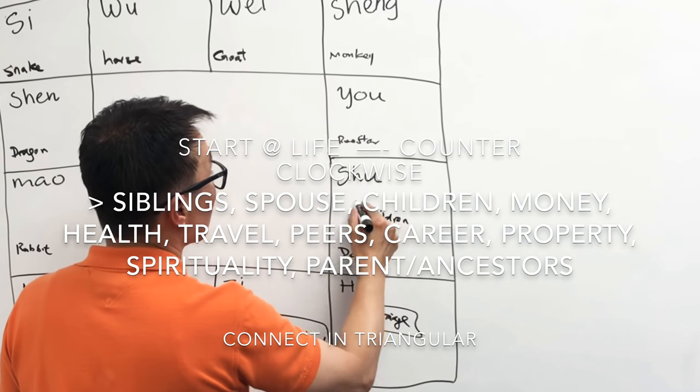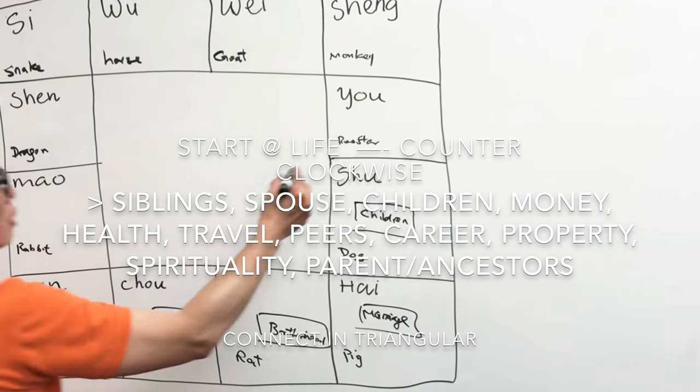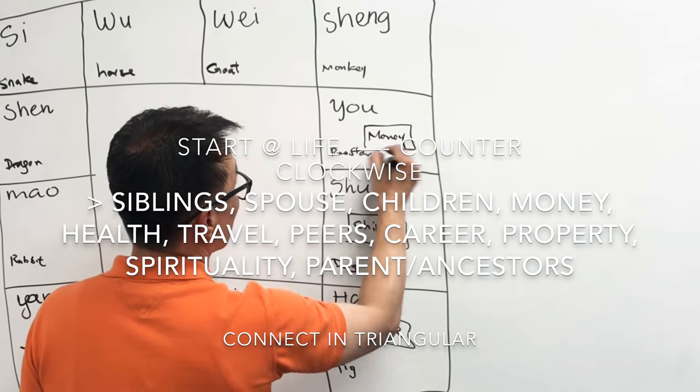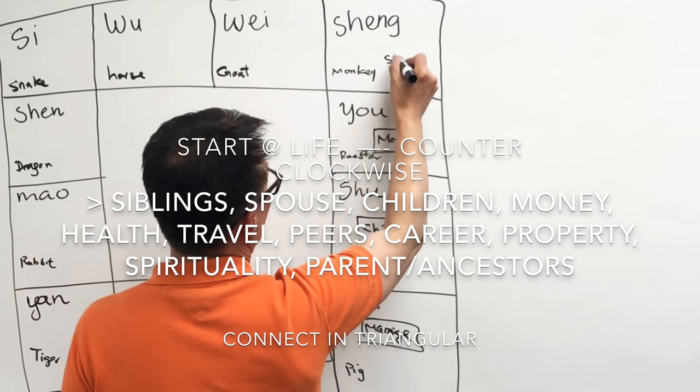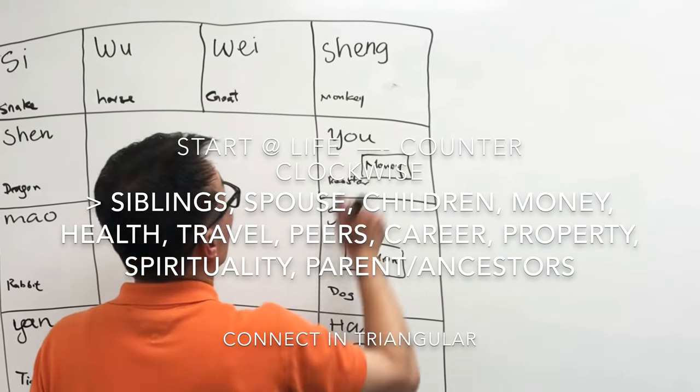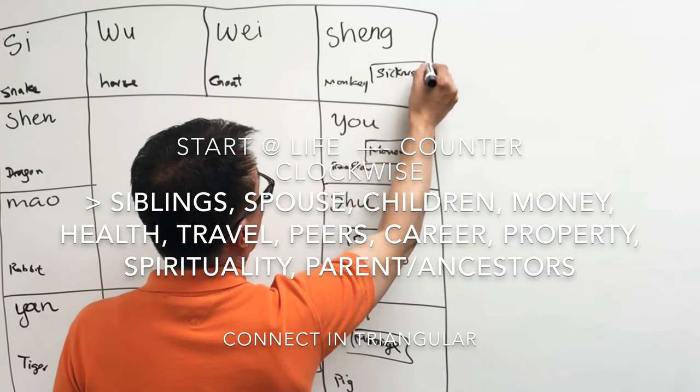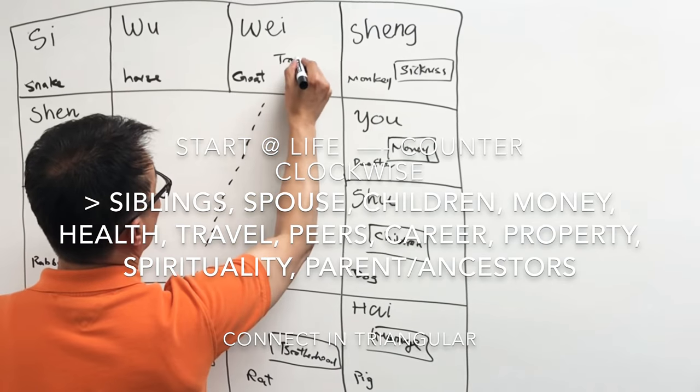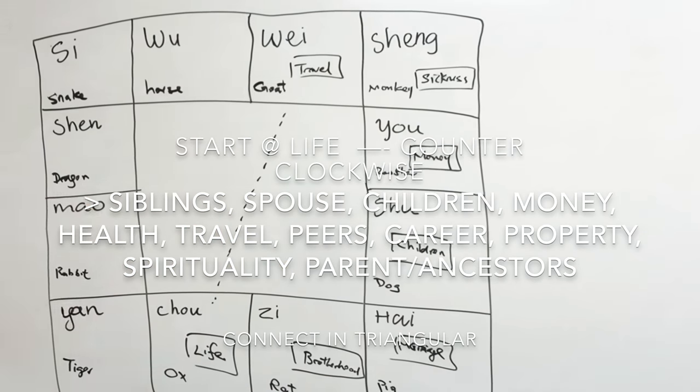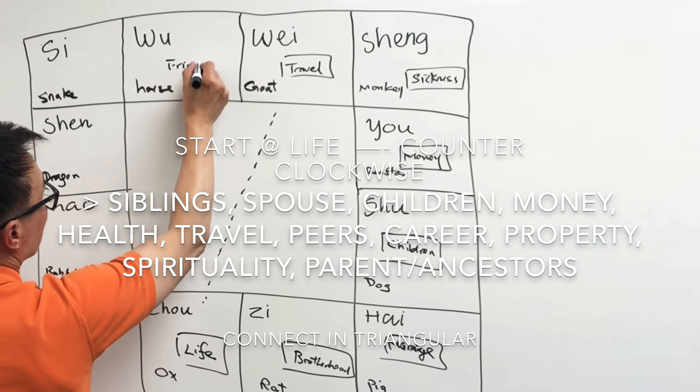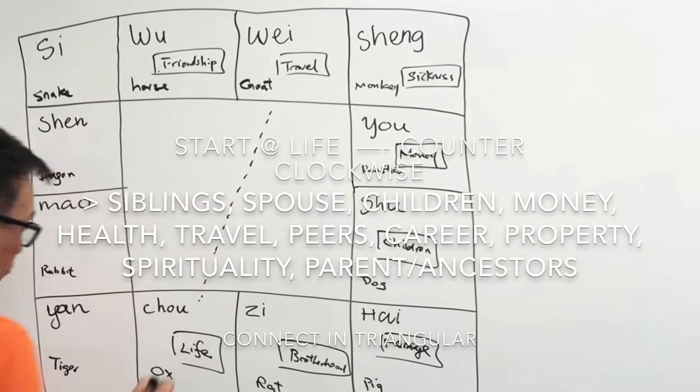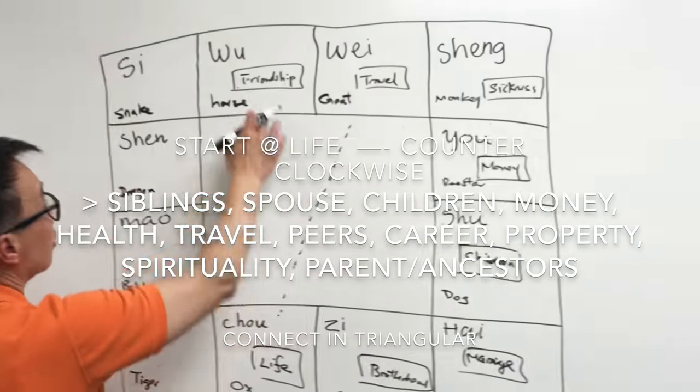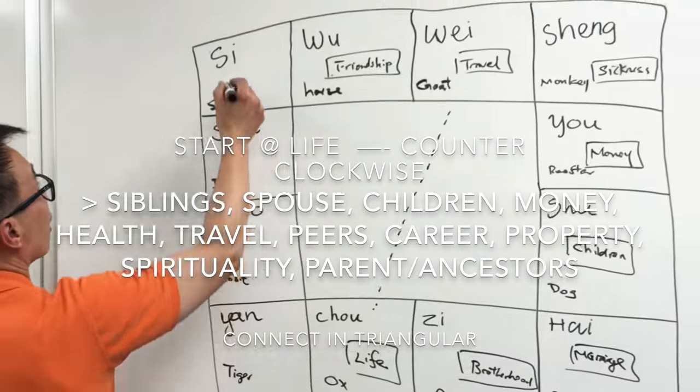After this one is the money. Then after money will be sickness. And then after sickness, right opposite to your life, is travel.